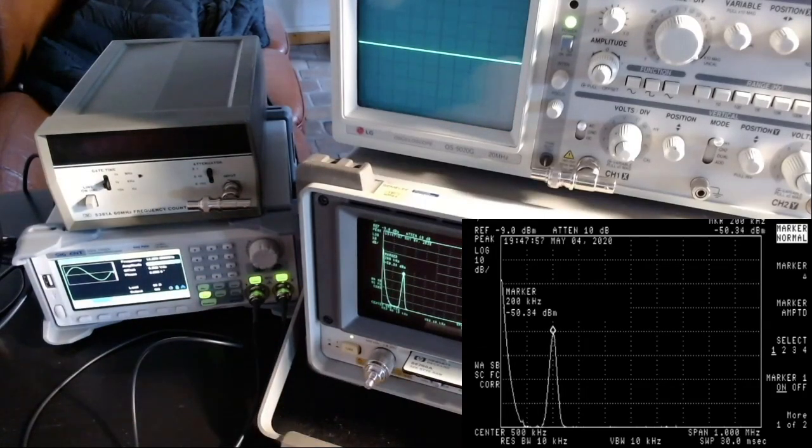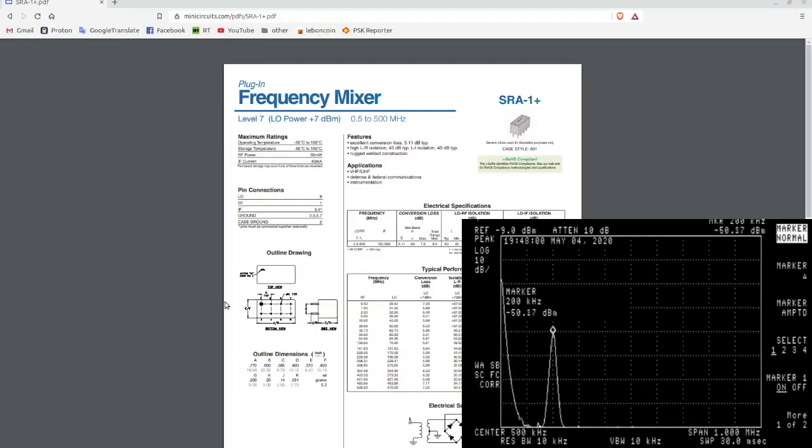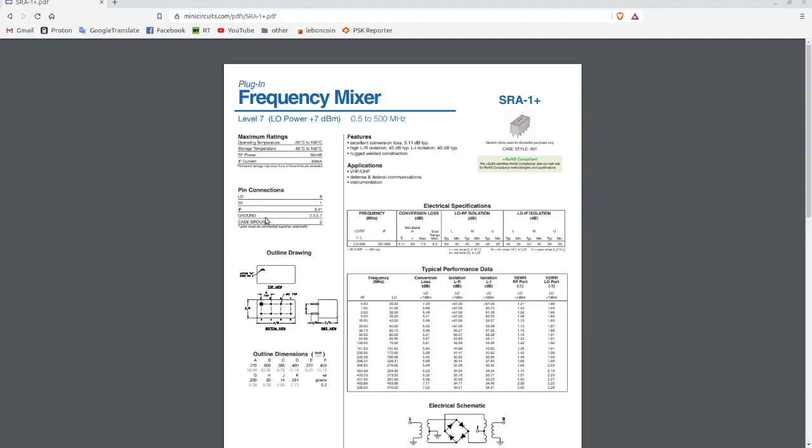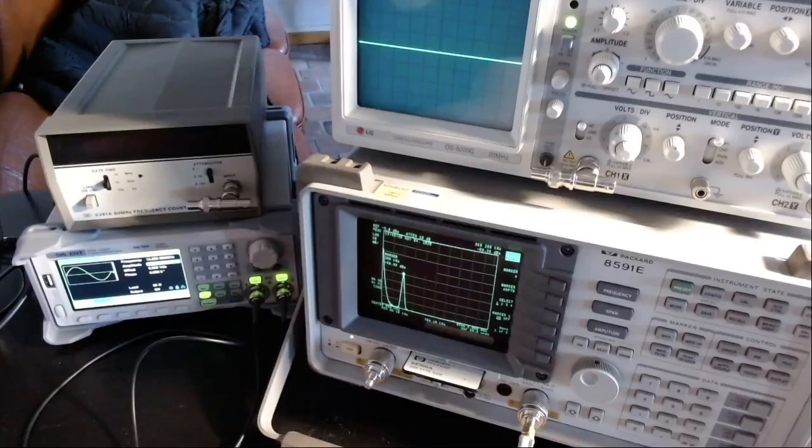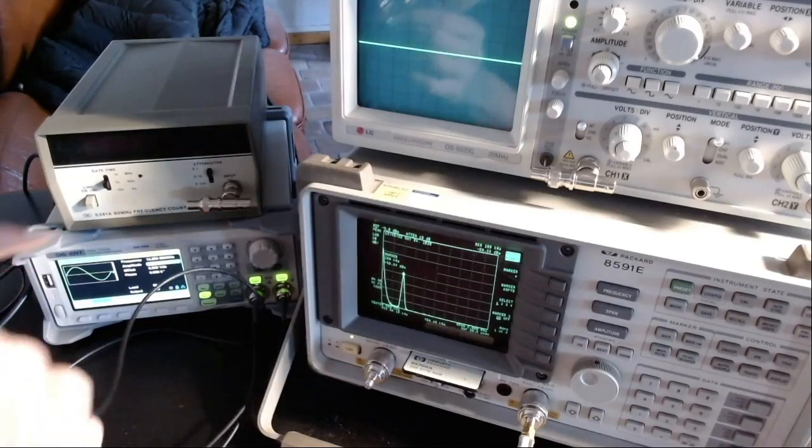If we go to the specification of this chip, the SRA1 from MiniCircuits, the conversion loss can vary depending on the local oscillator and the RF frequencies. You can see it's between 5, 6, or 7 dBm across the range from half a megahertz to 500 megahertz, which is the limit of this mixer. I'm pretty happy about this first test. Things are looking well, it works. I will do more tests in the near future.